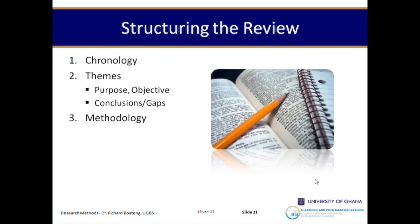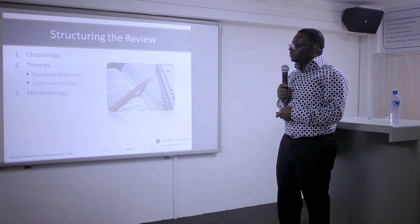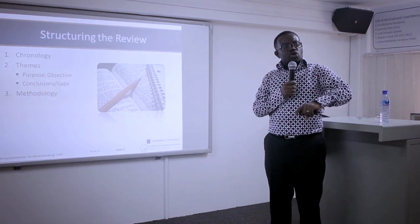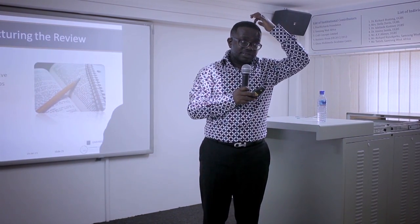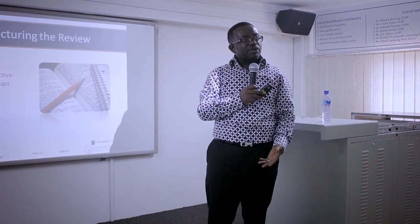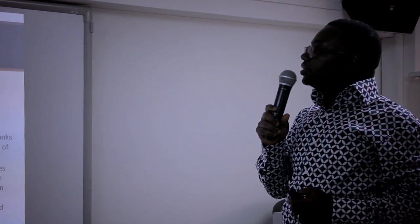You can also structure by themes. For example, in corruption in Africa we saw themes: the church and corruption, Islam and corruption, financial crime and corruption, oil and corruption — about four or five themes. You can also look at it in terms of methodology: papers using quantitative versus qualitative approaches, or papers done at the national/macro level versus industry/meso level versus individual/micro level. Remember, we discussed level-of-analysis gaps earlier.